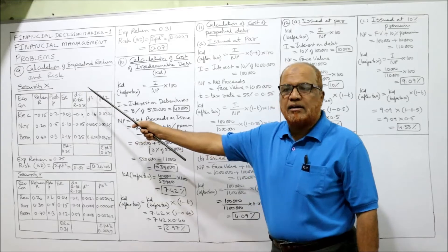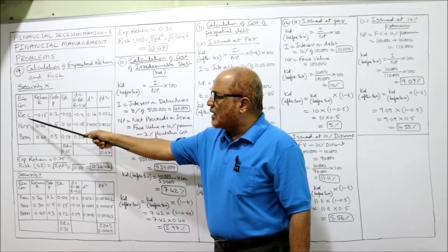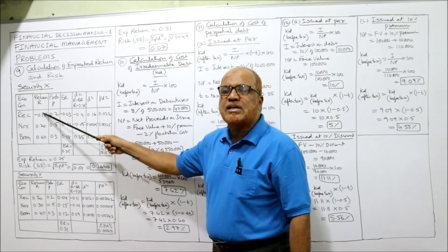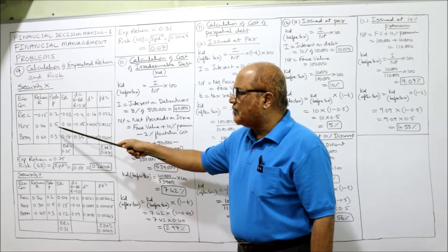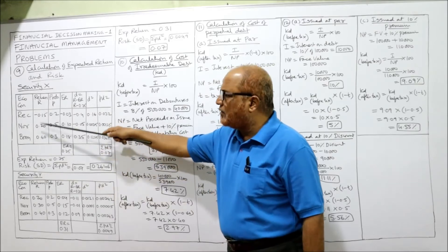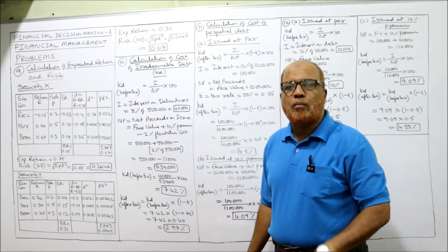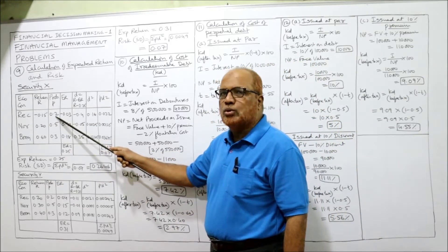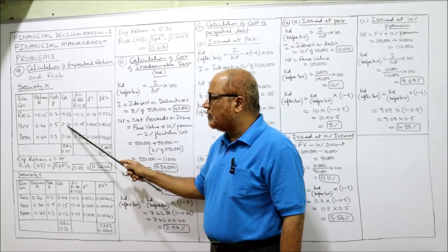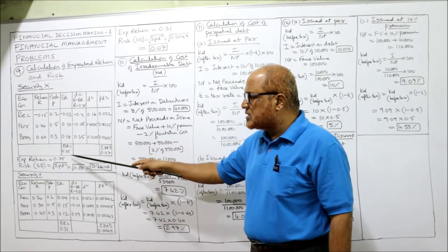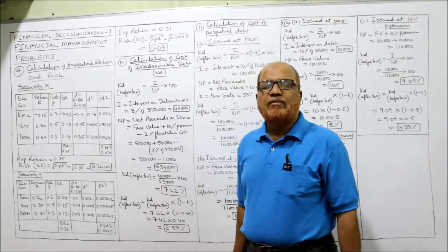For the calculation of expected return and risk, I am first taking security X. The economic conditions, return, and probability columns are written. Returns for X are -0.15, 0.20, 0.60, and probabilities are 0.2, 0.5, 0.3. To get expected return (ER), multiply return by probability: -0.15 × 0.2 = -0.03, 0.20 × 0.5 = 0.10, 0.60 × 0.3 = 0.18. The total expected return is 0.25.